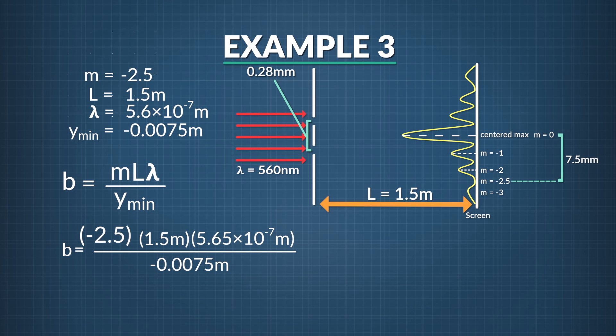So b equals minus 2 and a half times 1.5 meters times 5.65 times 10 to the negative 7 meters, all divided by negative 0.0075 meters, which equals 0.28 millimeters. That's how far apart the two slits are that would create this particular wave interference pattern.